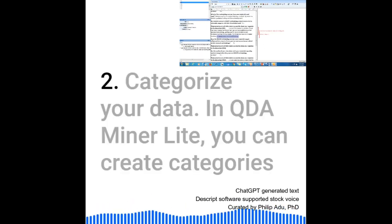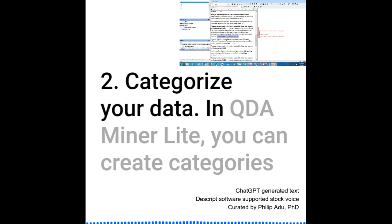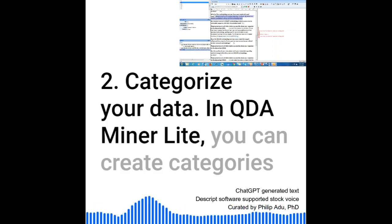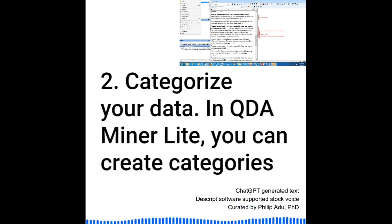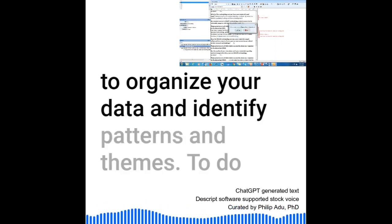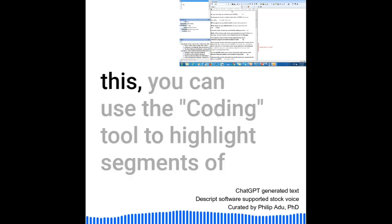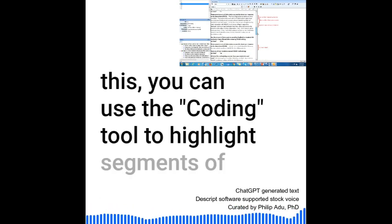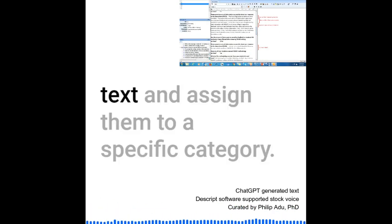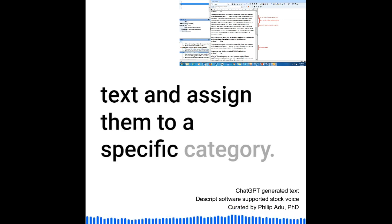Step 2: Categorize your data. In QDA MinerLite, you can create categories to organize your data and identify patterns and themes. To do this, you can use the coding tool to highlight segments of text and assign them to a specific category.